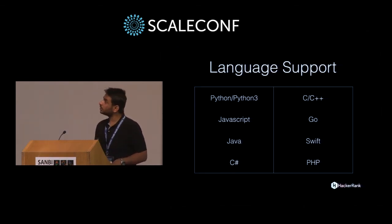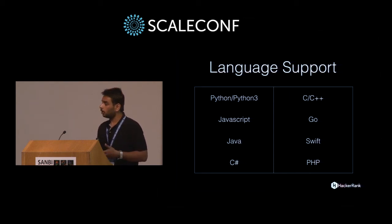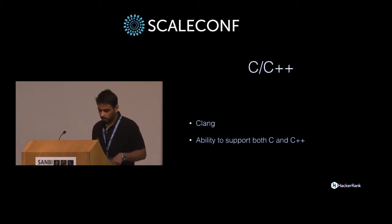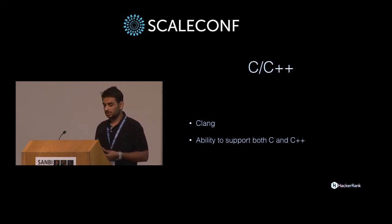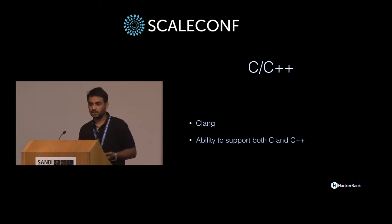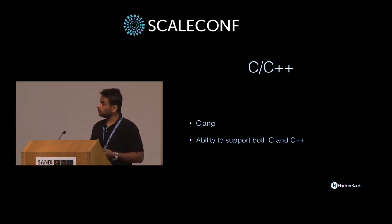This is the current language support we have — lots of languages — and we plan to add more. For C and C++, we use CLang, which also has an error recovery mode for the parser. If that doesn't work for you, you can write your own interface. It supports C, C++, and Objective-C on Linux.